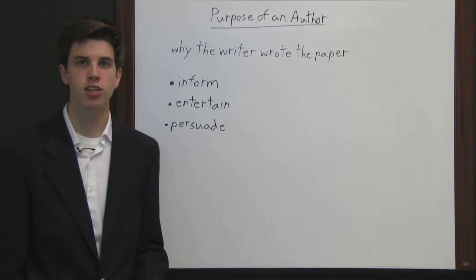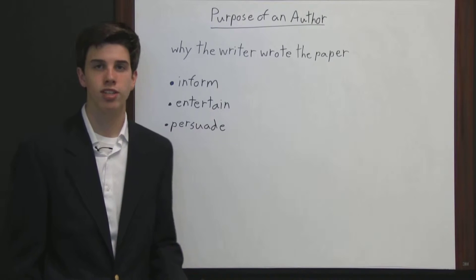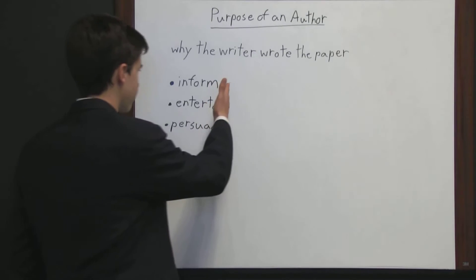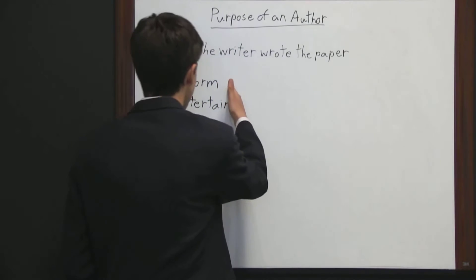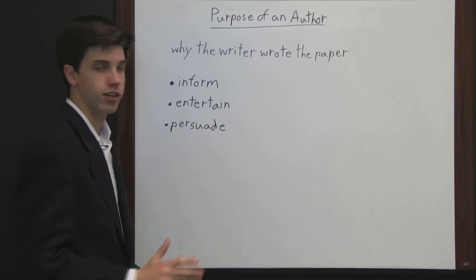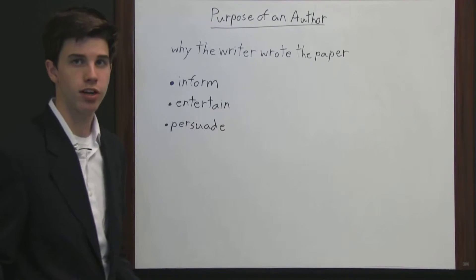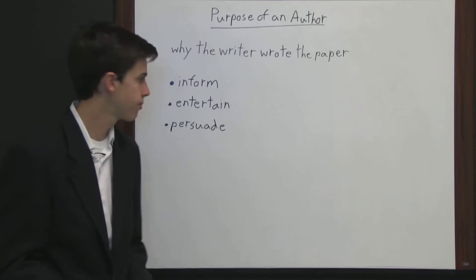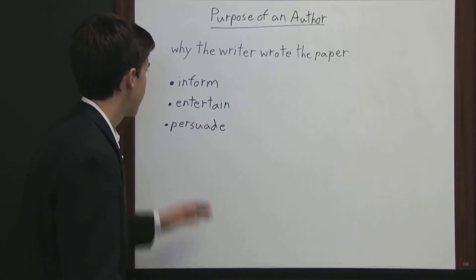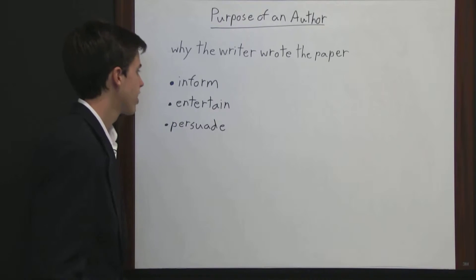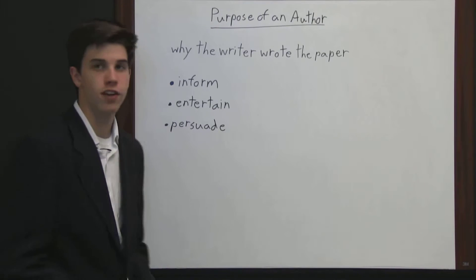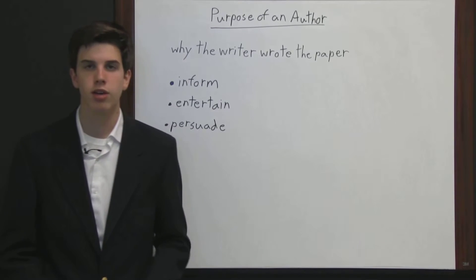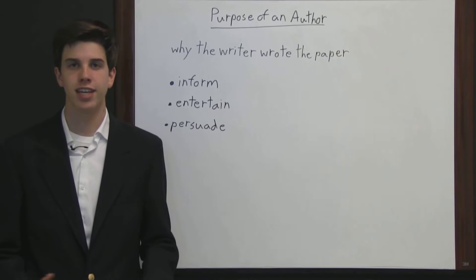Generally, it's pretty easy to determine what type of paper something is. An informative paper is basically when the writer is just giving the reader facts about something — telling them more about a topic. A paper that is meant to entertain is generally fiction. Pretty much any kind of fiction work is meant to entertain.